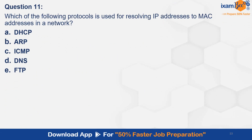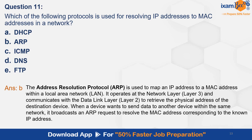Question 11. Which of the following protocols is used for resolving IP addresses to MAC addresses in a network? Option A. DHCP. B. ARP. C. ICMP. D. DNS. E. FTP. And the correct answer is B — ARP. The Address Resolution Protocol maps an IP address to a MAC address within a local area network. It operates at the network layer and communicates with the data link layer to retrieve the physical address of the destination device. When a device wants to send data to another device within the same network, it broadcasts an ARP request to resolve the MAC address corresponding to the known IP address.